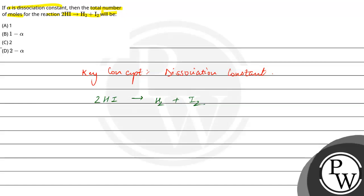If we see this initially, the number of moles will be 2, and the number of moles will be 0, 0. Because initially there is no product.